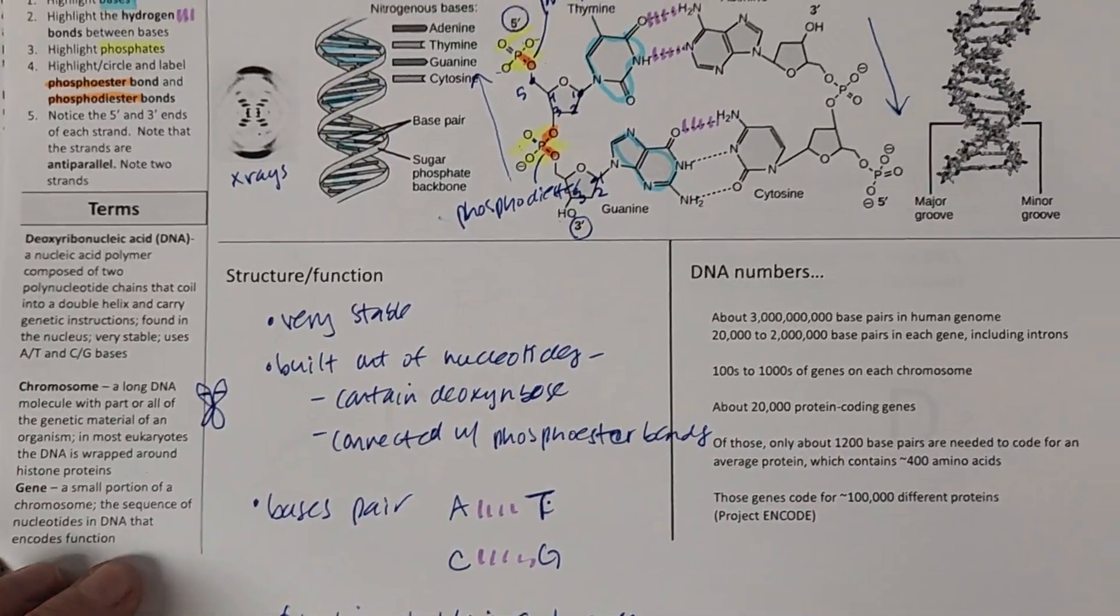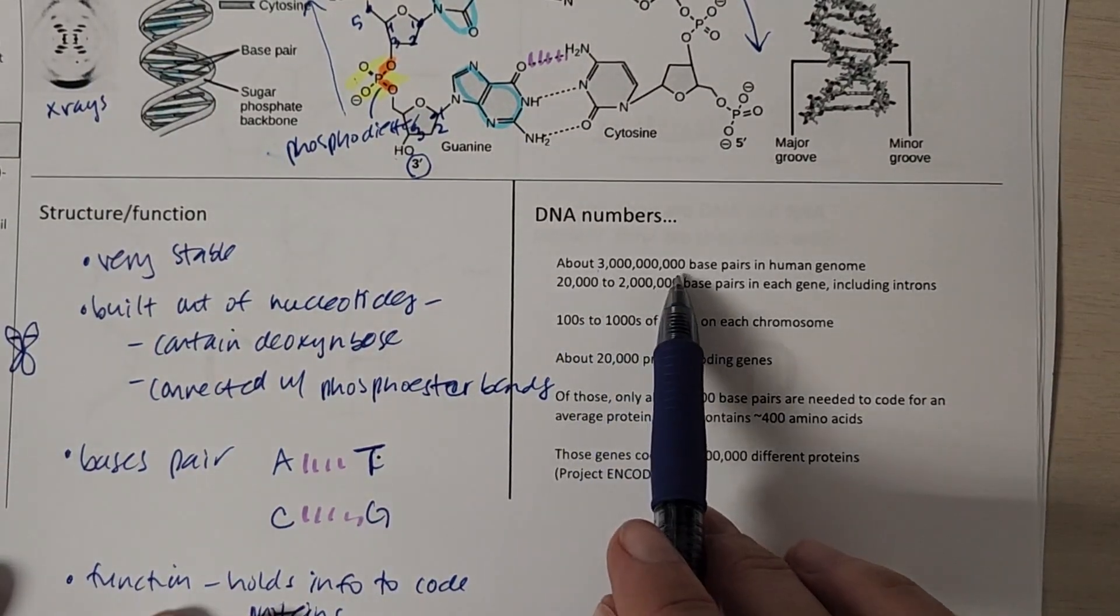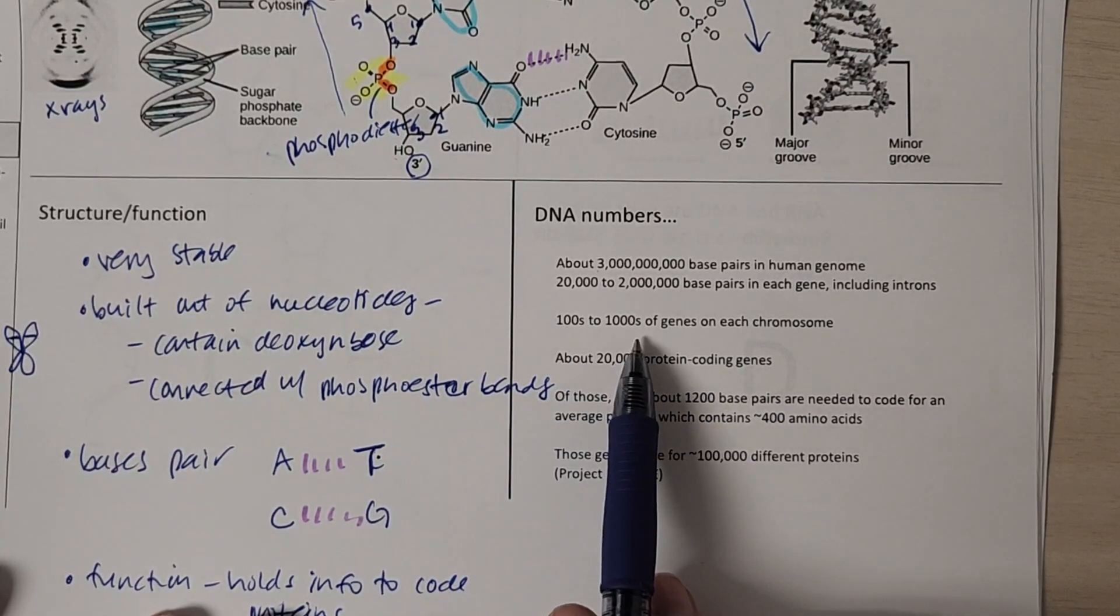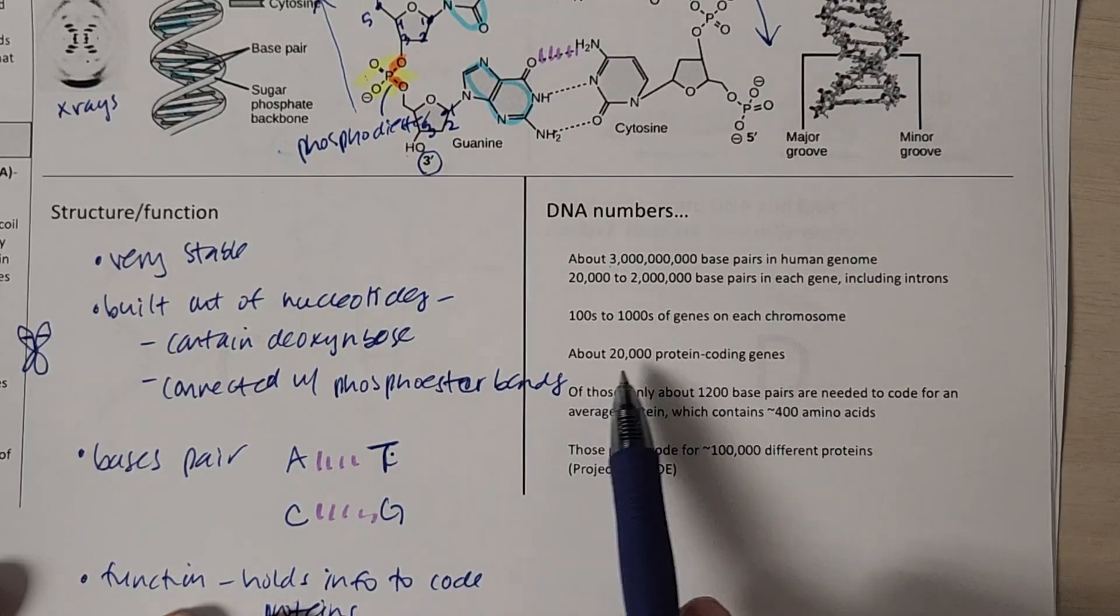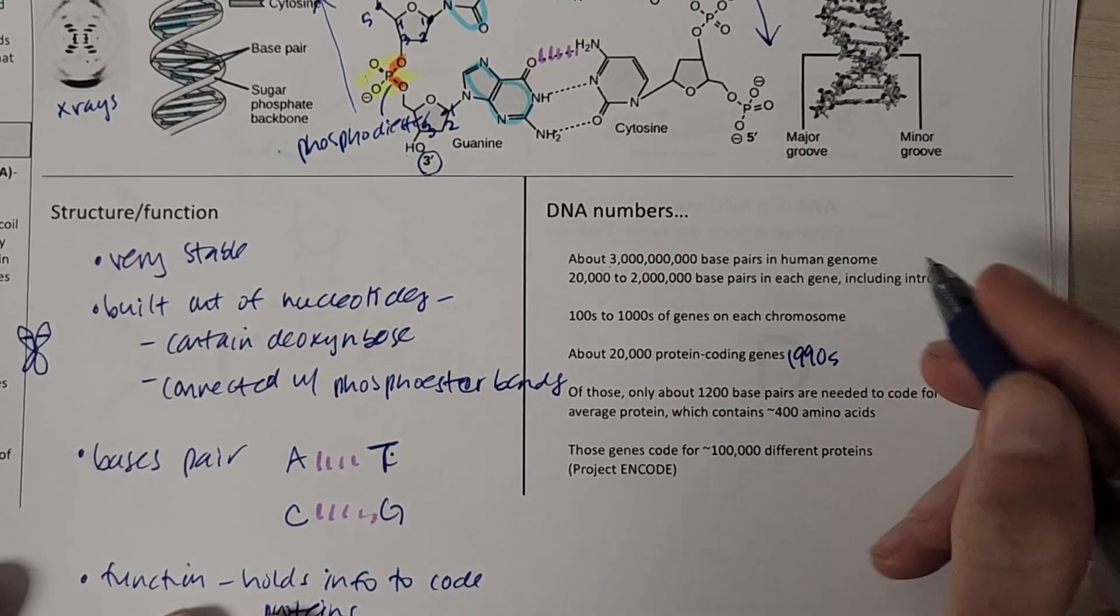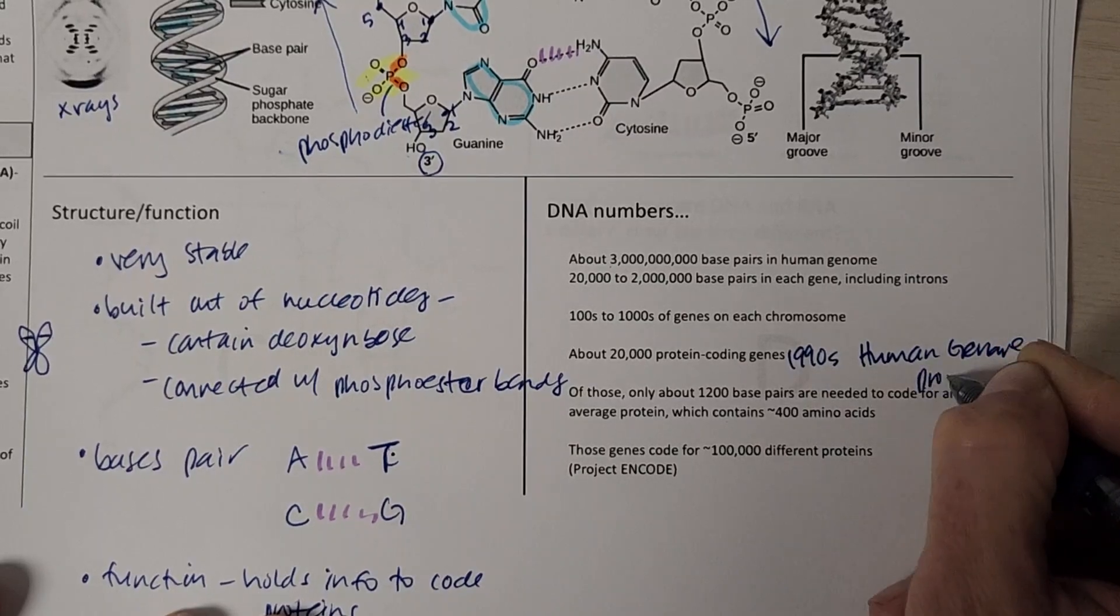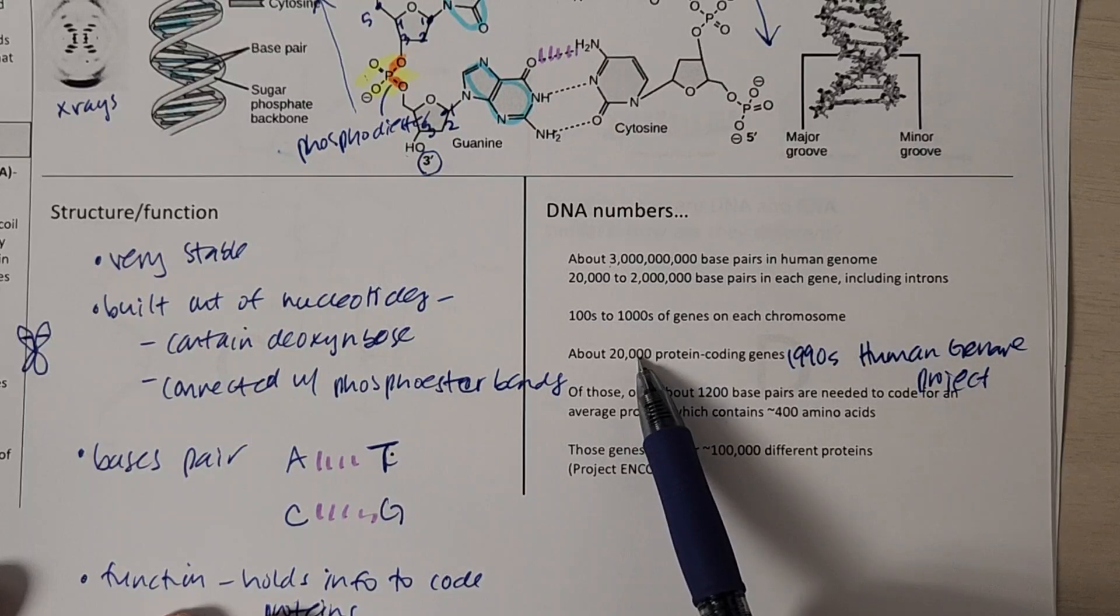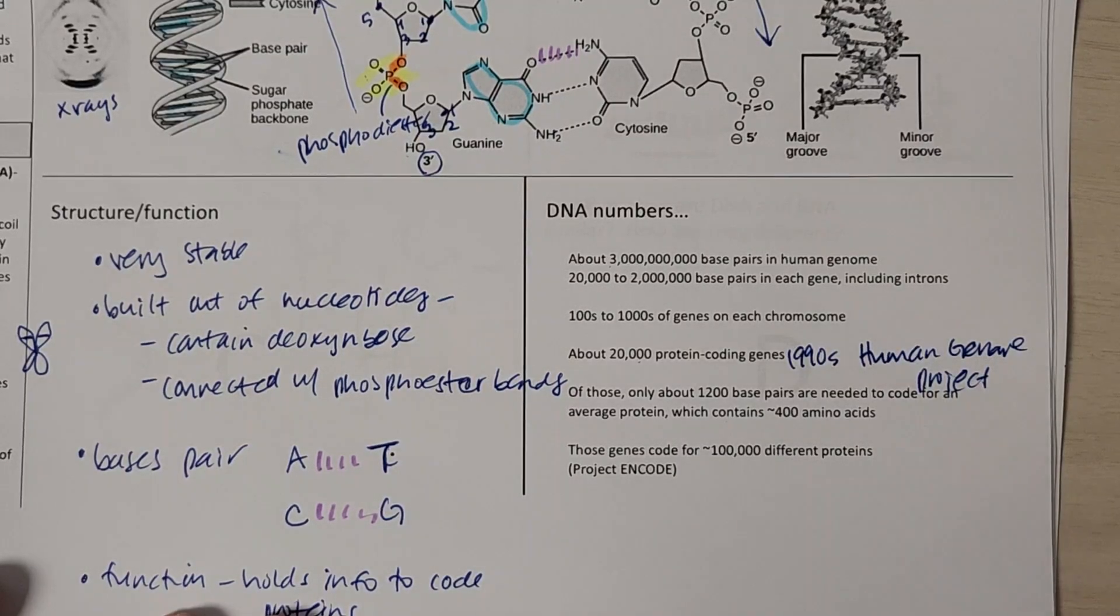A few other just fun facts, if you're into random facts and big numbers. So there are about 3 billion base pairs in the human genome. There are hundreds or thousands of genes on each little chromosome. There are about 20,000 protein coding genes. And some of this work was done in the 90s and before the 1990s, through the Human Genome Project. They actually expected at one point to find one gene per protein. But these 20,000 genes actually code for about 100,000 different proteins, it turns out.